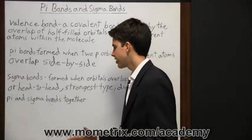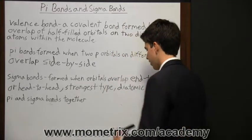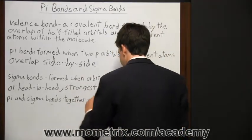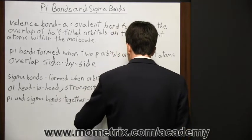Now, pi bonds and sigma bonds can sometimes be together. And they are together in double and triple bonds.